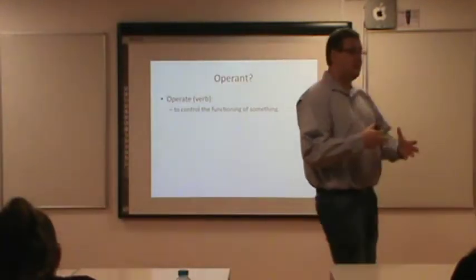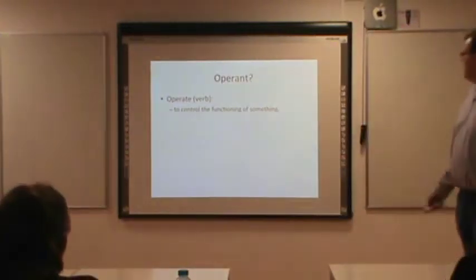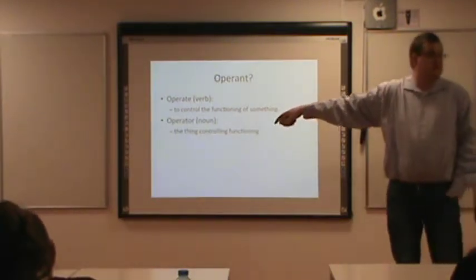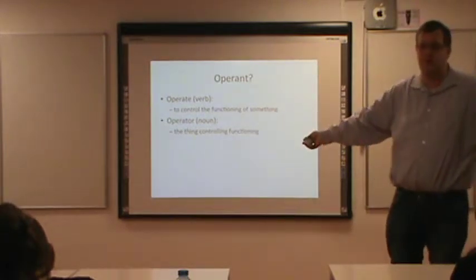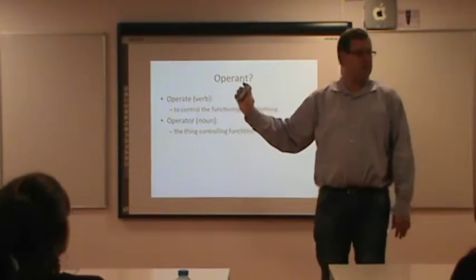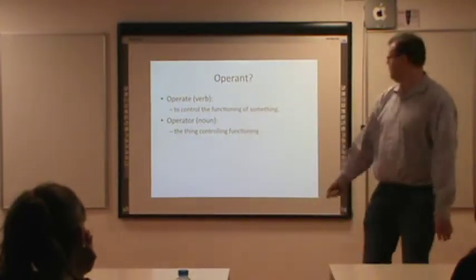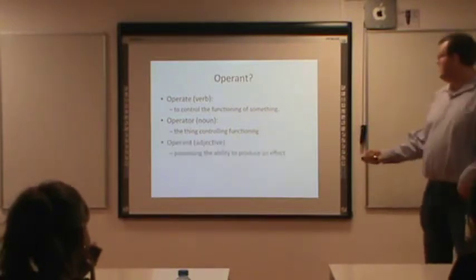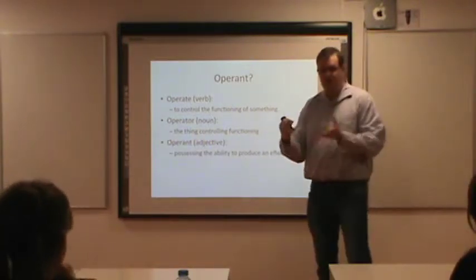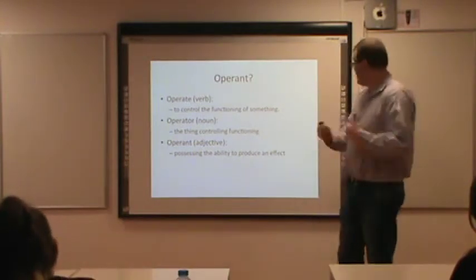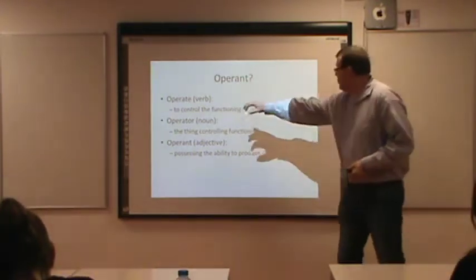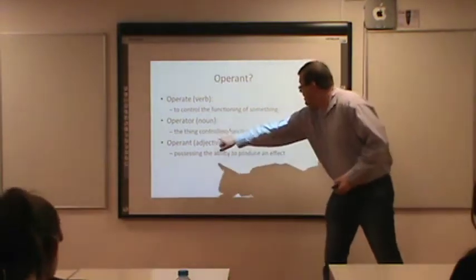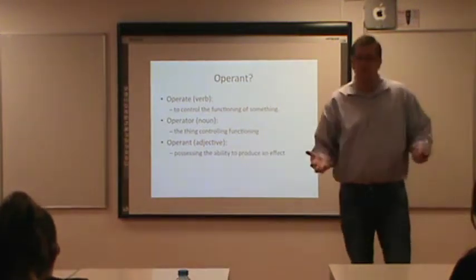'Operant' is an adjective meaning having the ability to produce or control something. Operating is controlling the functioning, the operator is the thing controlling, and the operant is the ability to do this control. So 'operating' means controlling the functioning, 'operator' is the thing controlling, and 'operant' is the ability to do this control.